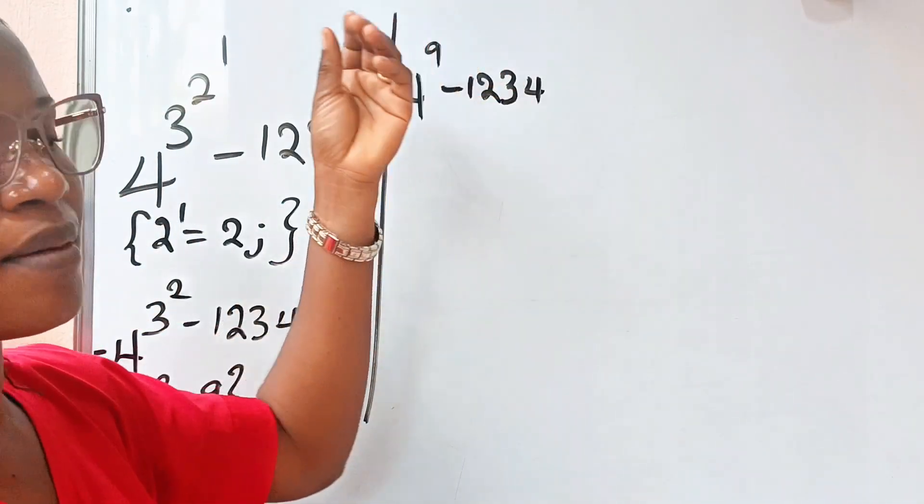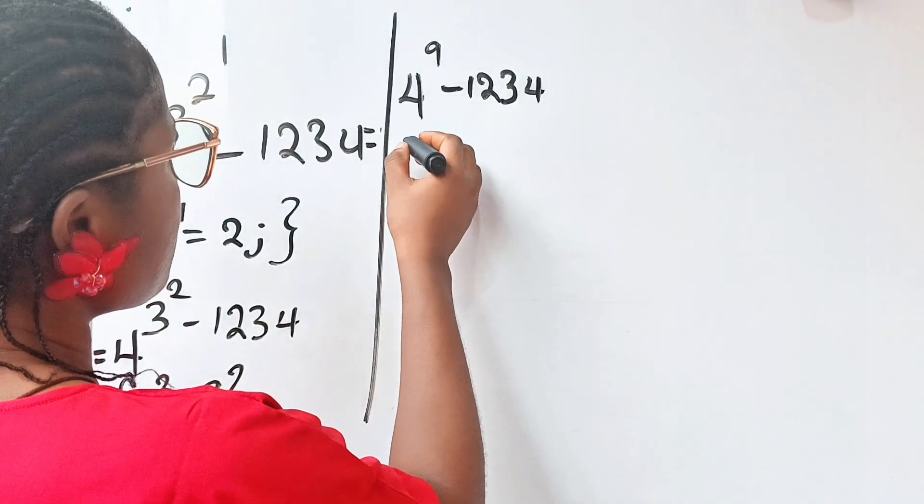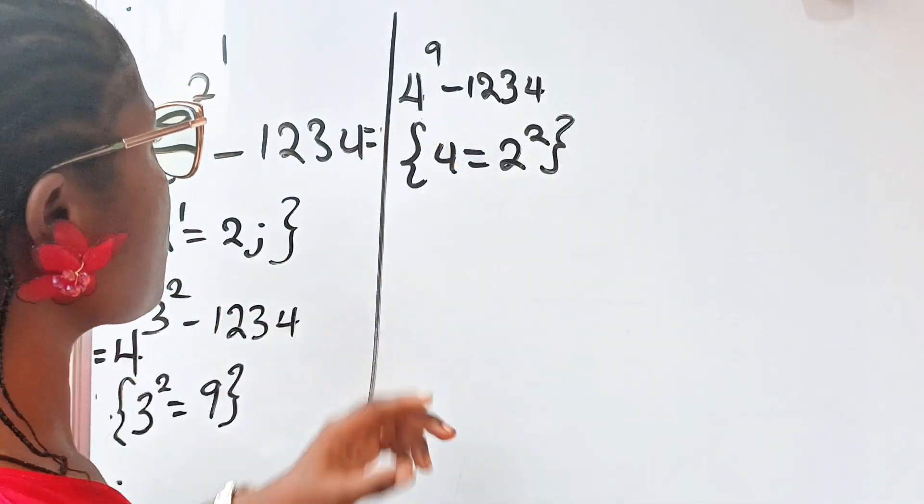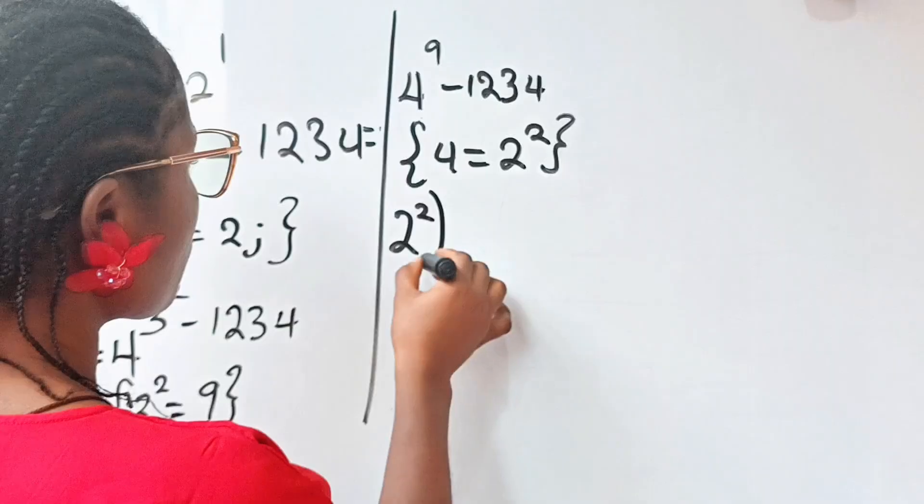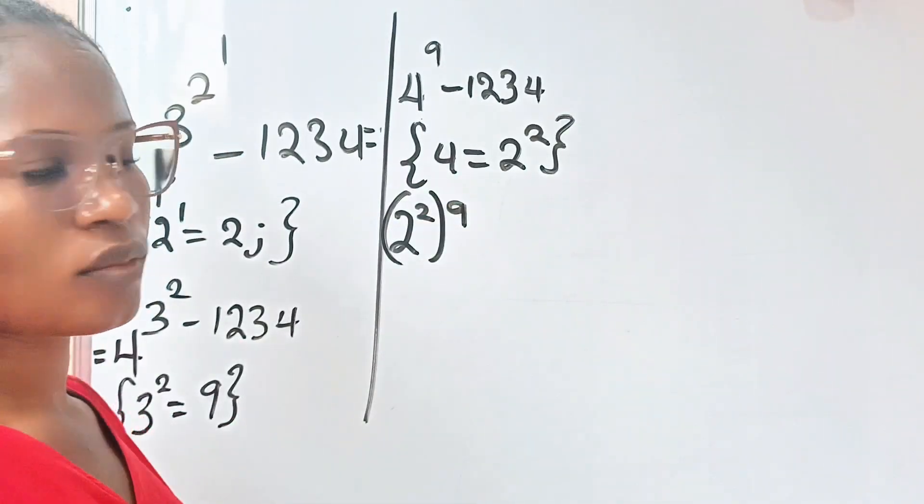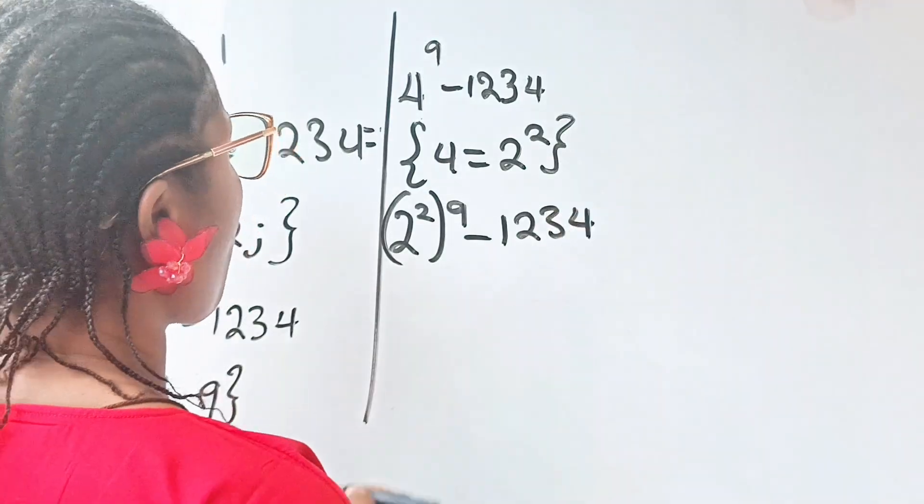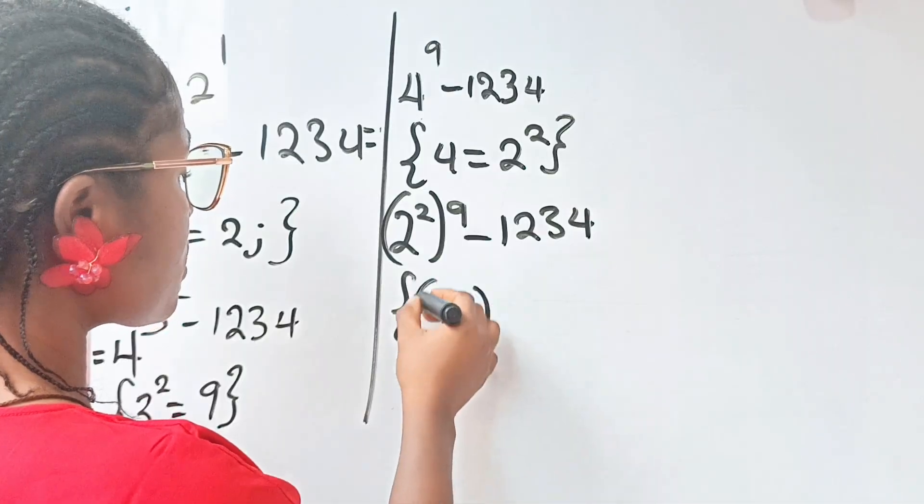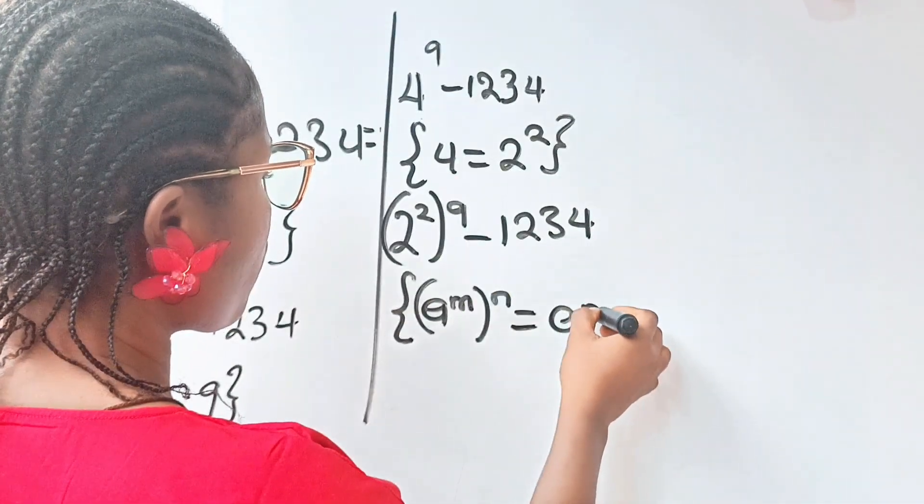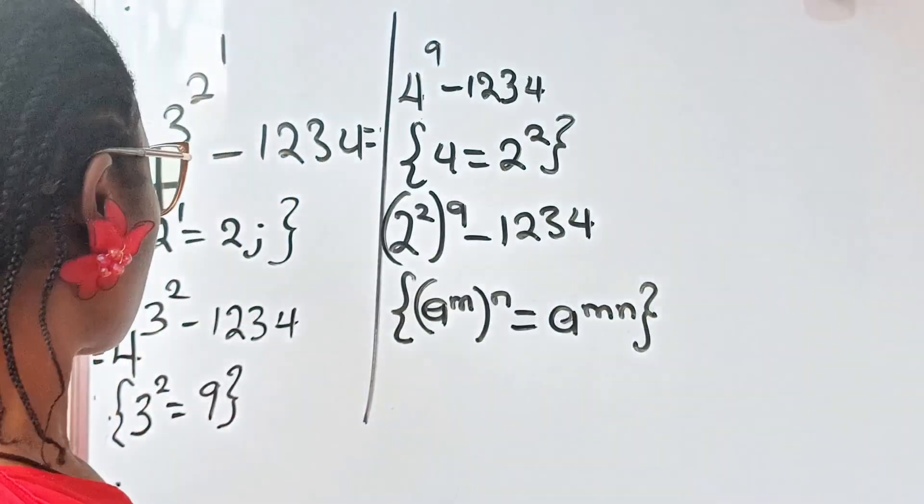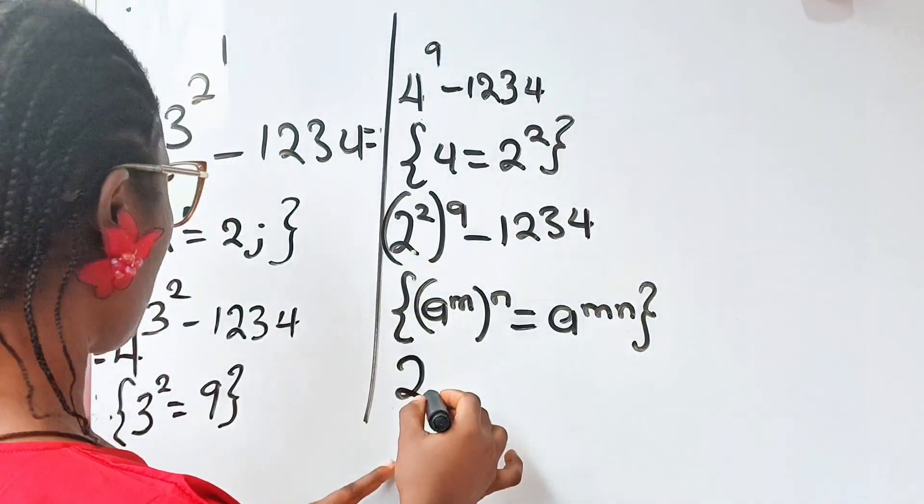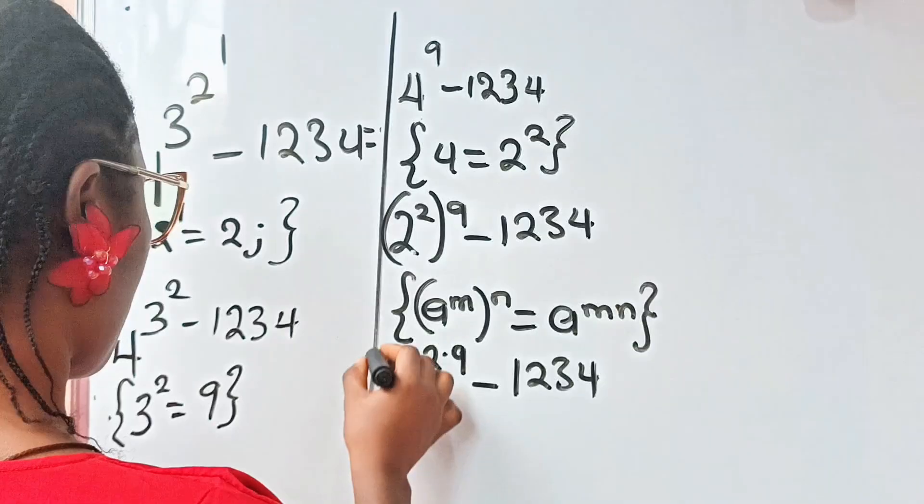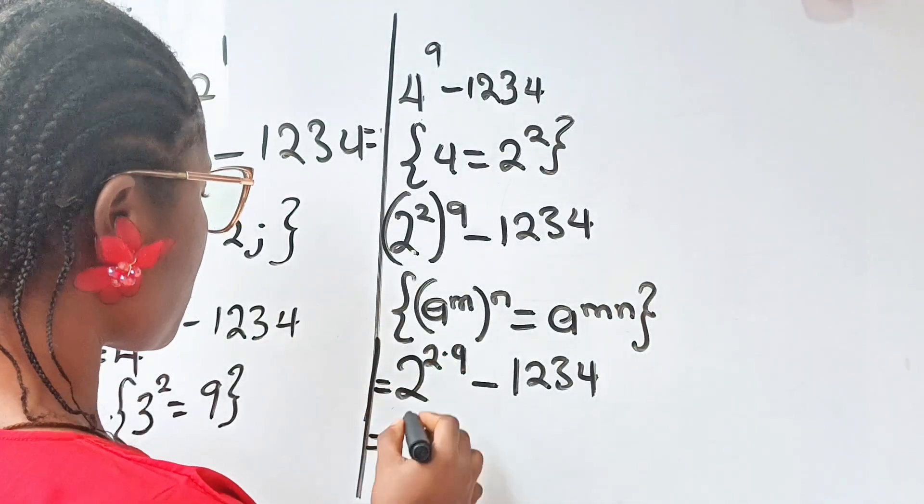So, 4 to the power of 9 can be simplified further as 4 is the same thing as 2 to the power of 2. So, I can write this as 2 to the power of 2 raised to the power of 9 minus 1234. Now, remember that a to the power of m raised to the power of n is equal to a to the power of m times n. So, this will give us 2 to the power of 2 multiplied by 9 minus 1234.